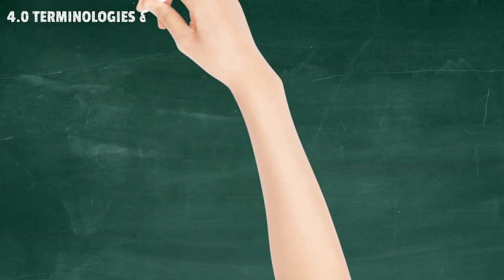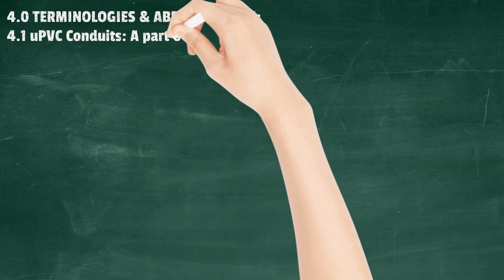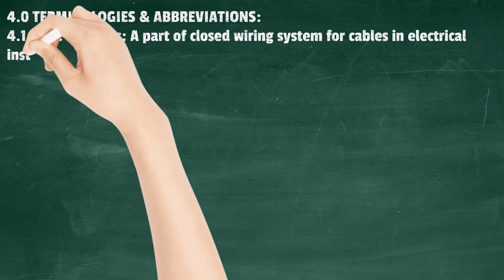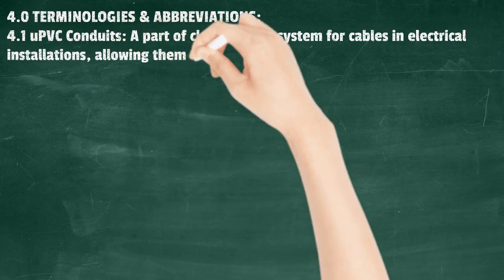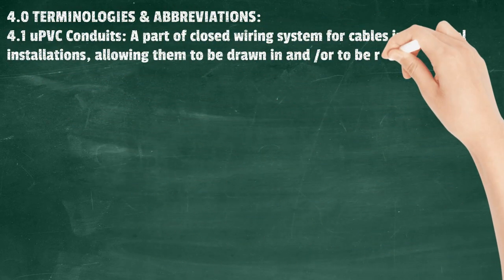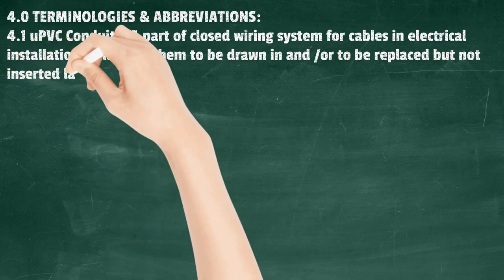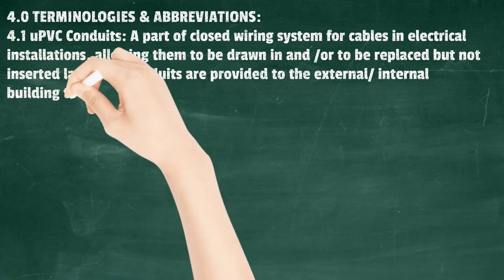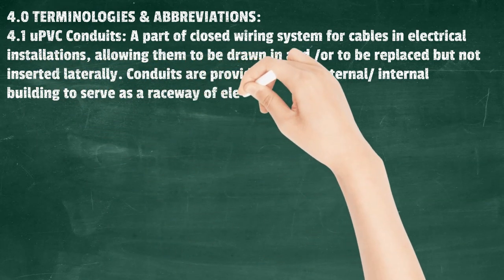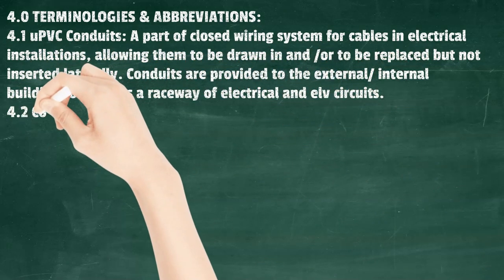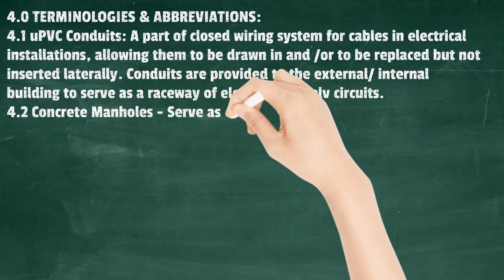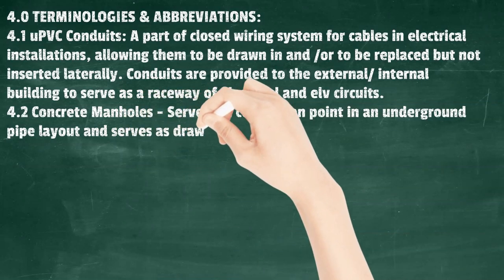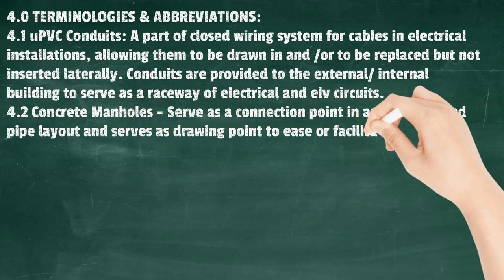Terminologies and Abbreviations: UPVC conduits are part of a closed wiring system for cables in electrical installations, allowing them to be drawn in and/or replaced but not inserted laterally. Conduits are provided to external/internal buildings to serve as a raceway for electrical and LV circuits. Concrete manholes serve as connection points in an underground pipe layout and serve as draw points to facilitate easy pulling of cable in long-route underground cabling work.